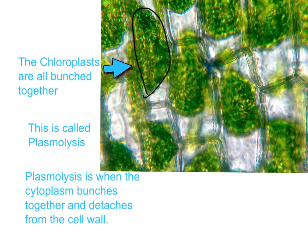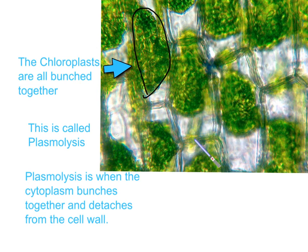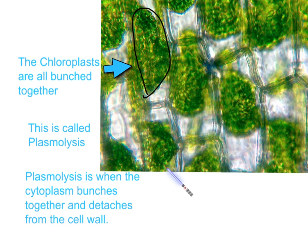Here we have the process of plasmolysis. Plasmolysis is when the cytoplasm bunches together and detaches from the cell wall. This is because all of the water that used to be in the cell has exited due to osmosis to balance the water-salt ratio.